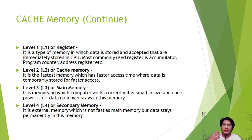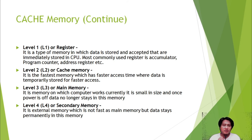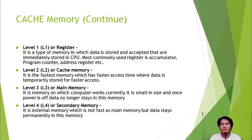That data will not stay in Level 3 memory unless you save your work to Level 4, or secondary memory. Level 4 or secondary memory is external memory that is not as fast as main memory, but data stays permanently. Examples include HDD, SSD, compact disc, DVD, floppy disk, and magnetic tape — those are your Level 4 or secondary memory.